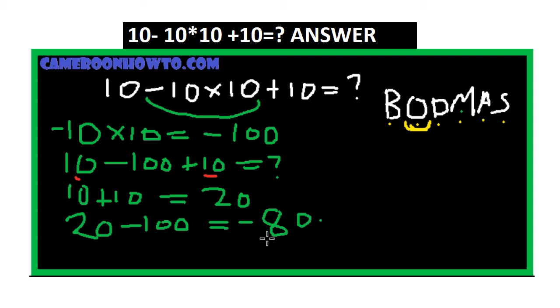All right, so therefore the correct answer to 10 minus 10 times 10 plus 10 equals is negative 80. Yes, this is the correct answer. Some people have negative 110, but the correct answer is negative 80 if you are actually following BODMAS.